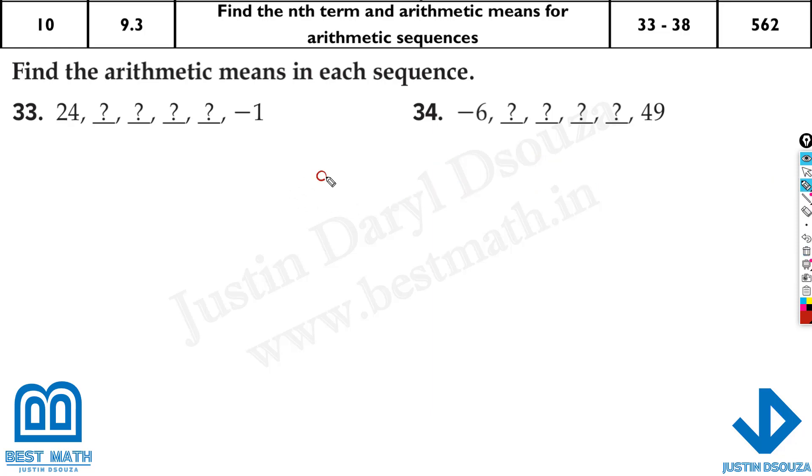Let me write down the formula. a_n equals a_1 plus (n minus 1)d. What is the first term? a_1 is 24. What is the last term? We can count out which term because we don't know the middle terms. These are the means. I can say this is first, second, third, fourth, fifth, sixth term.